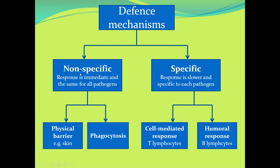Today we're going to focus mainly here. The nonspecific response — the first line of defense — is a physical barrier, which could be skin that stops the entrance of pathogens into our body. It could be hydrochloric acid in our stomach, earwax, or mucus released by goblet cells. But our main focus today is phagocytosis.